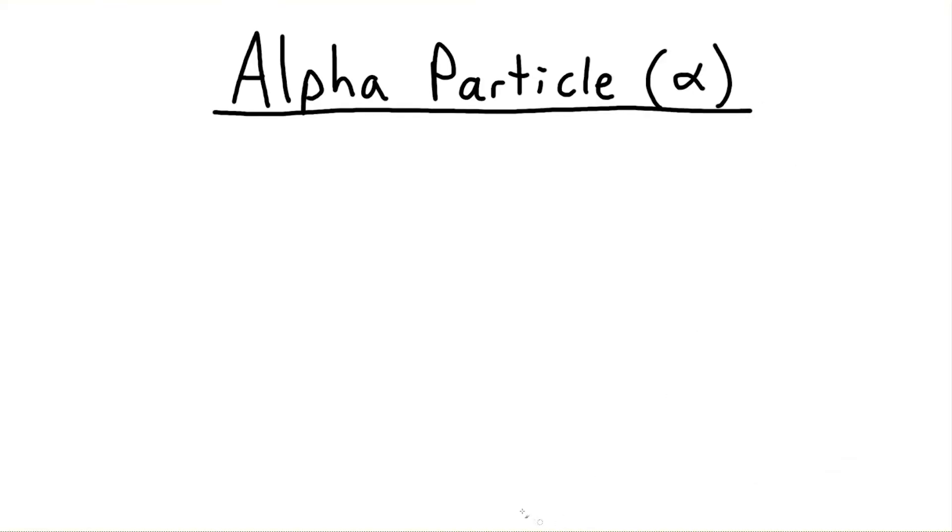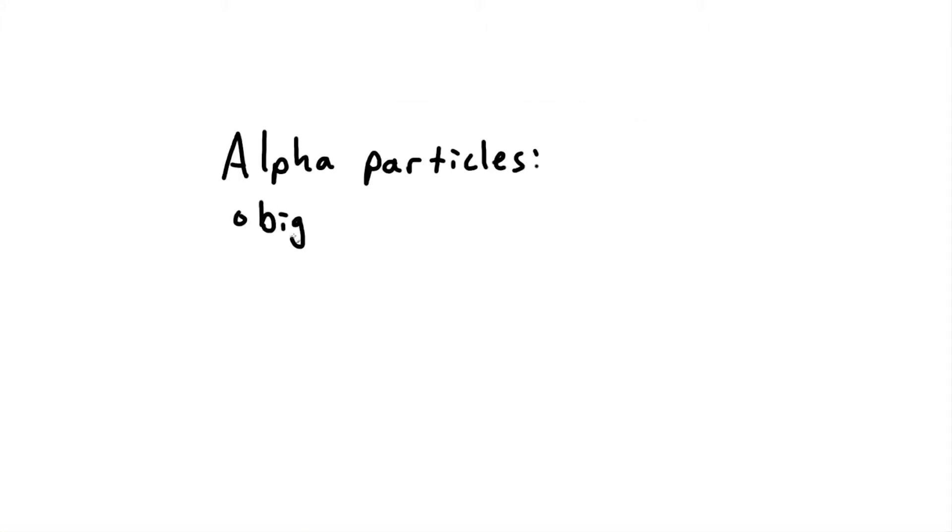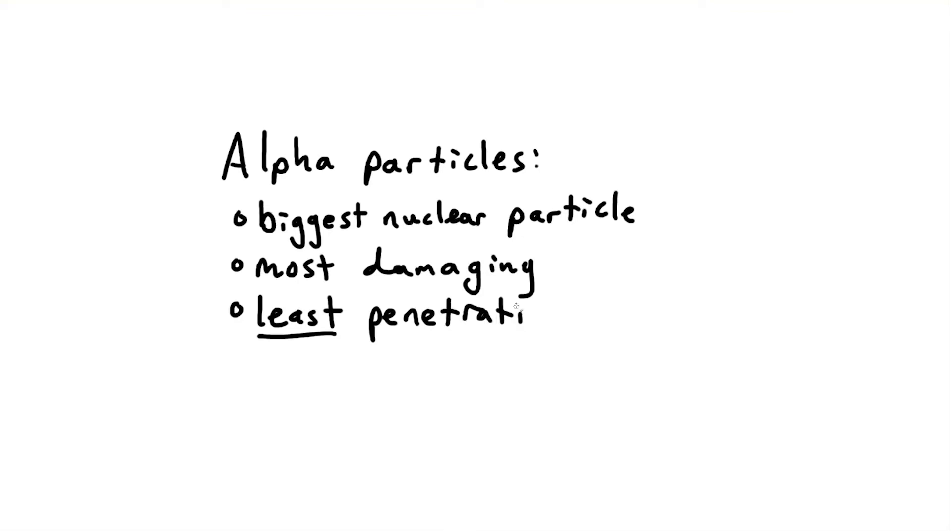Let's start with the alpha particle. An alpha particle is essentially a helium atom. It has two protons and two neutrons, just like a helium atom, but no electrons. Alpha particles are released when heavy radioactive elements, such as uranium and plutonium, decay. Although alpha particles are the biggest and most damaging radioactive particle, they are also the least penetrating. This is precisely because of their size and non-zero charge.